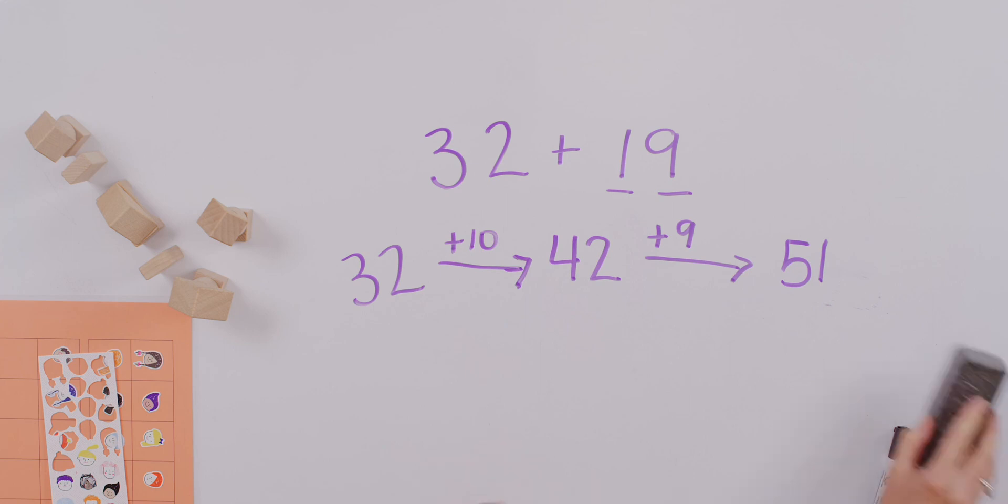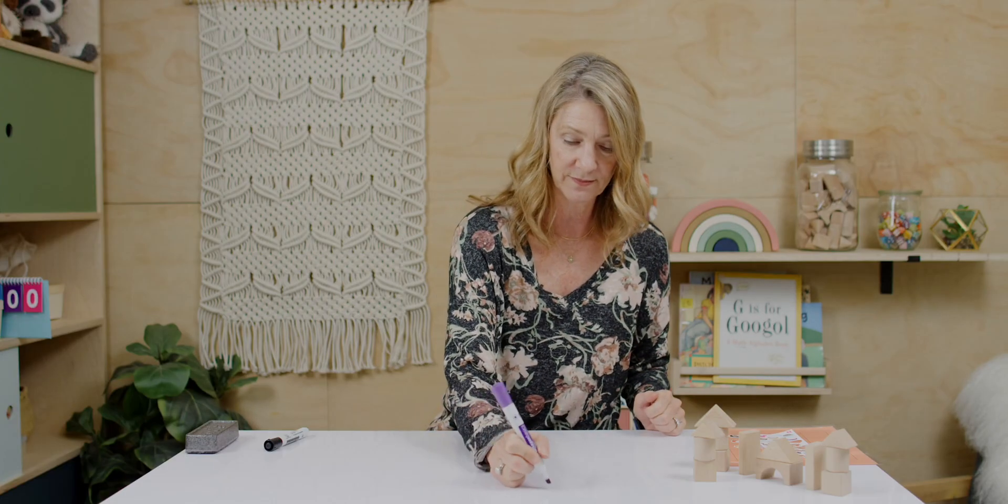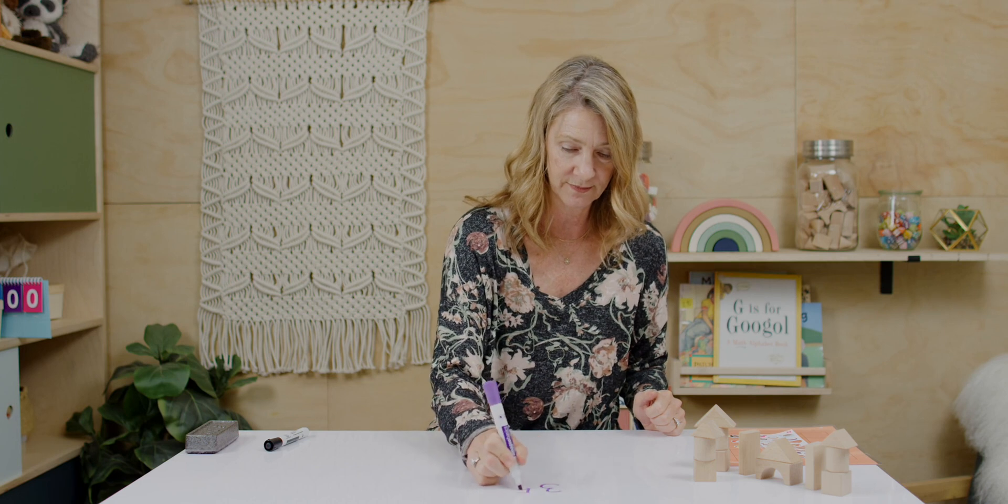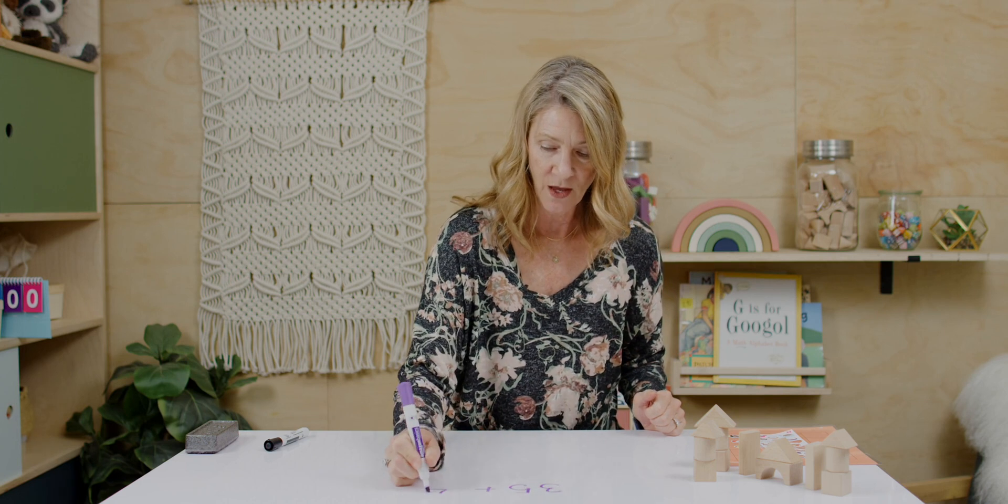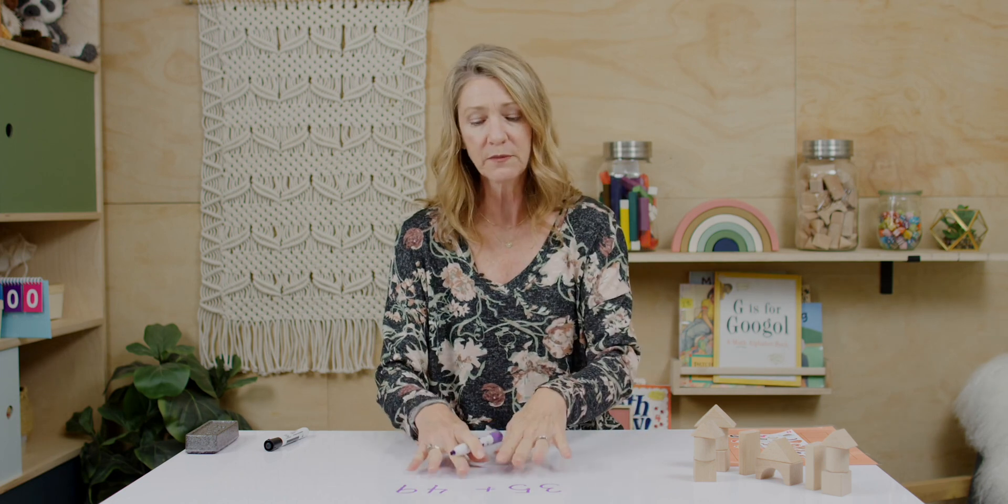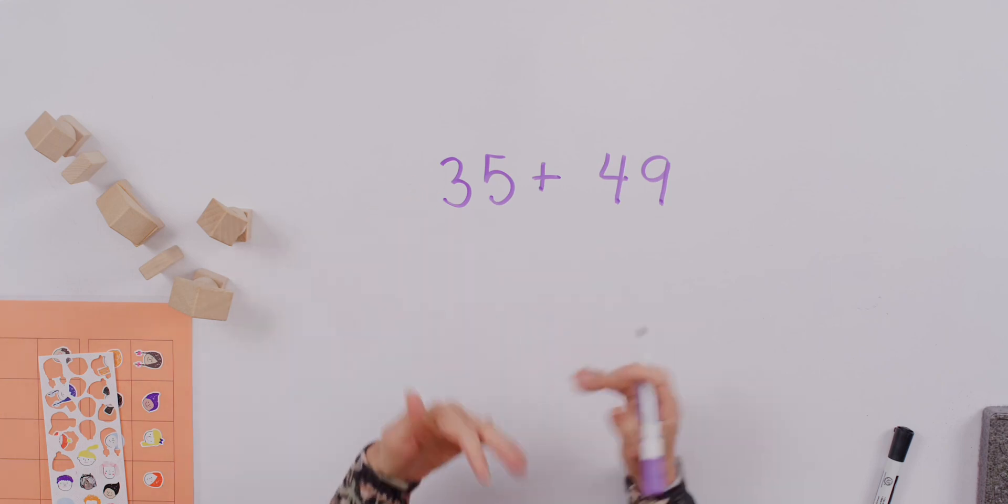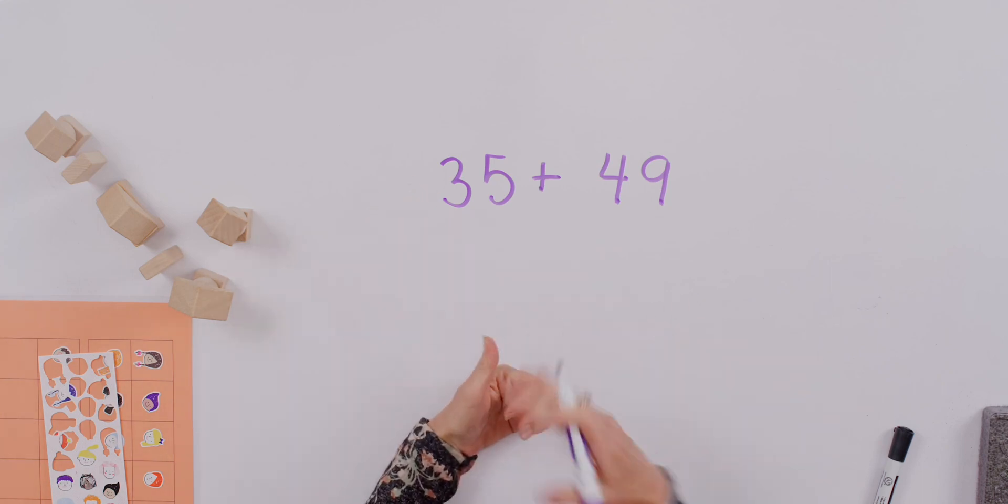Okay, let me show one more way to think about it. We can also just use the number bond strategy. If I look at thirty-five plus forty-nine, which number does it make most sense to you to work with to find a friendlier number?